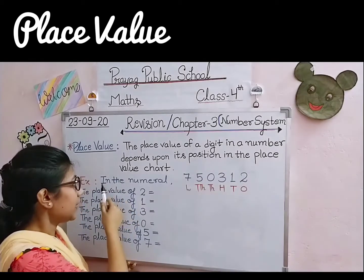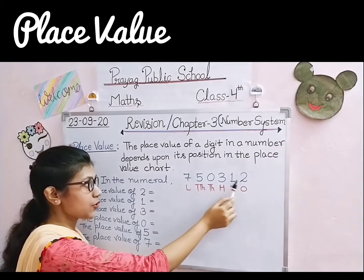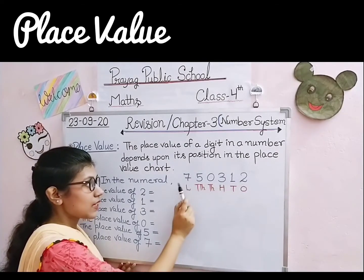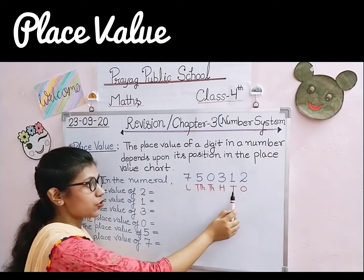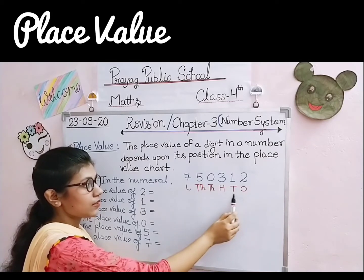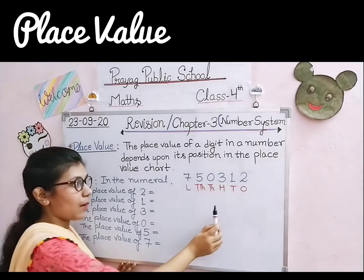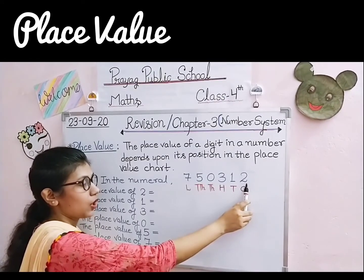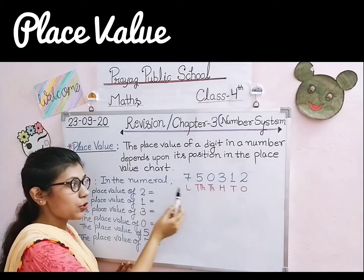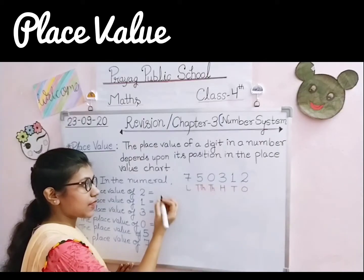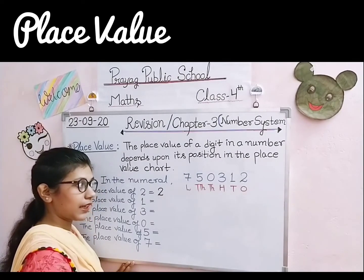तो चलिए, in the numeral 750312। हम इसे place value chart के according arrange कर लेते हैं: ones, tens, hundreds, thousands, ten thousands, lakhs। अब हम हर एक digit की place value लिखते हैं। The place value of 2 is 2 — 2 ones के place पे है, तो ones के place का digit as it is लिख देते हैं, उसमें कोई zero नहीं लगाते। The place value of 1 — 1 tens के place पे है, और tens के place पे जो भी digit होता है हम उसमें 10 लगाकर लिखते हैं।